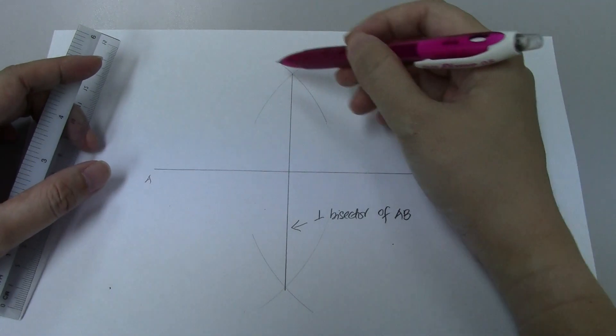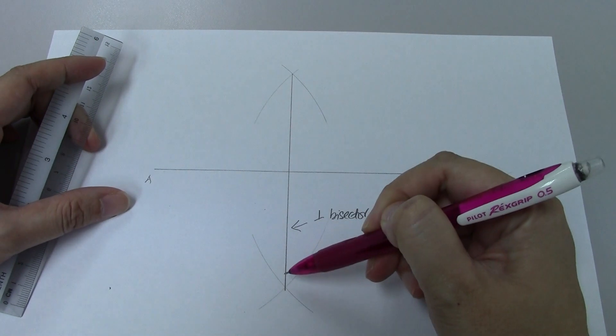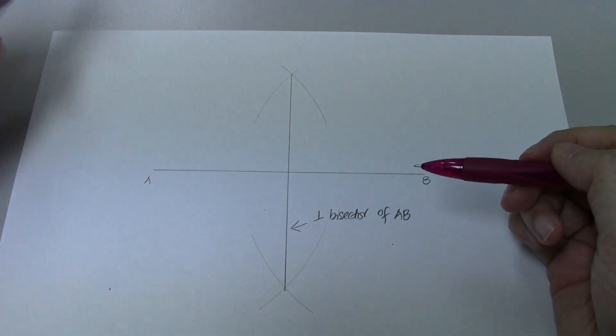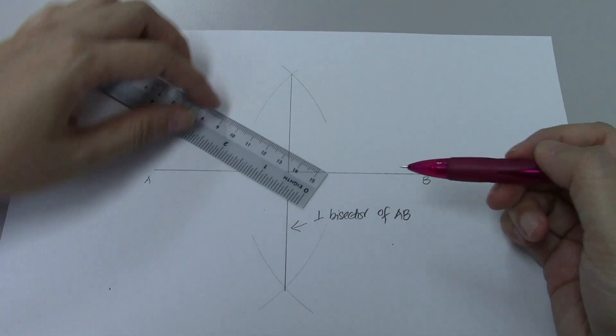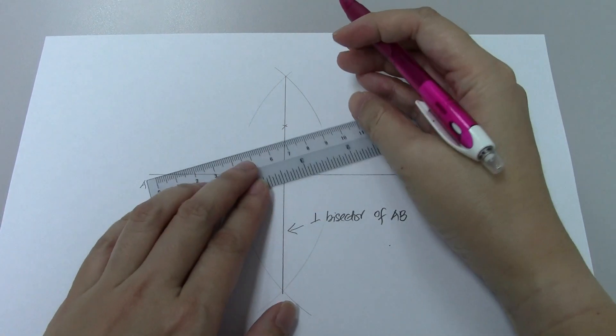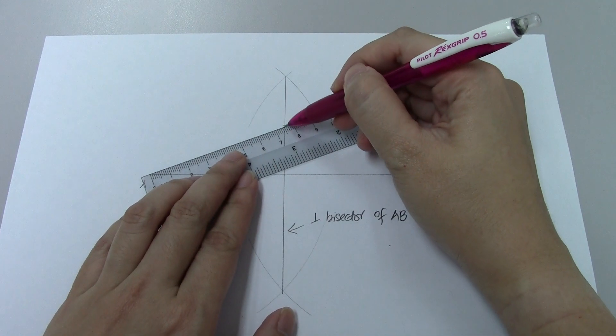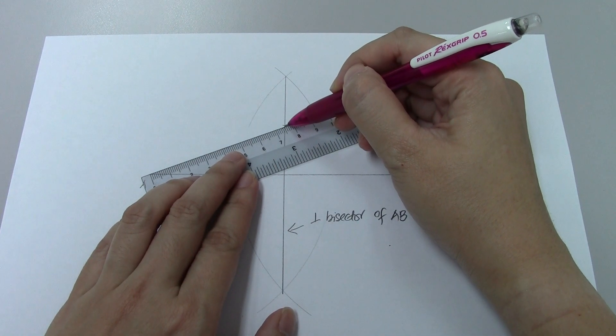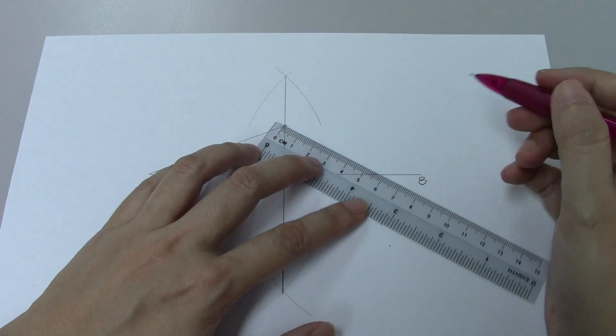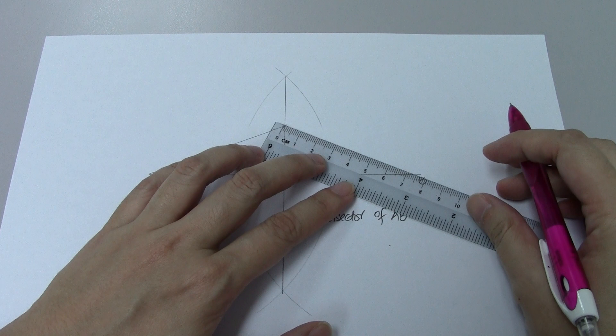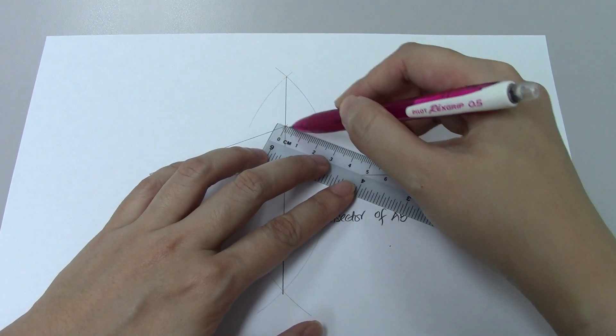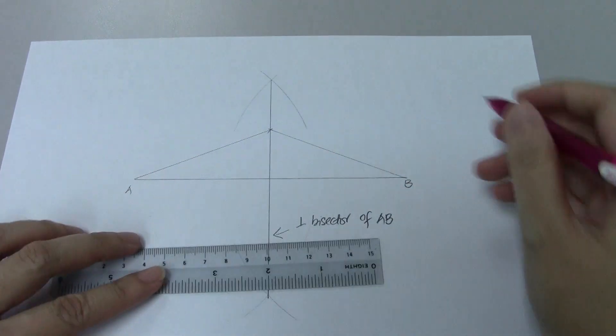Do you know that any point on this perpendicular bisector is equidistant to your point A and B? What do I mean by that? So for example, this point here, if you go ahead and measure the distance between this point on the perpendicular bisector to point A, and you go ahead and measure from that particular point to point B, they are the same.